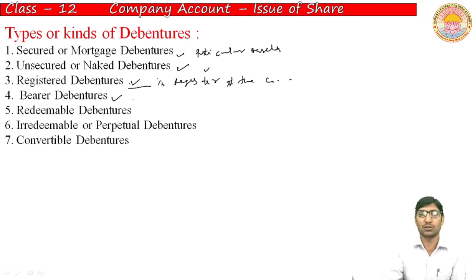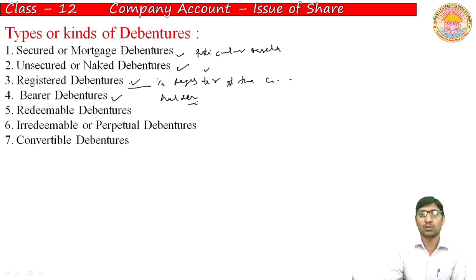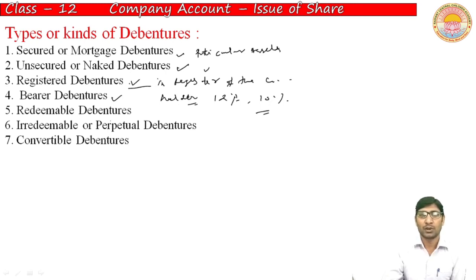The next type is bearer debenture. Bearer debentures are those which can be freely transferred by mere delivery — they can be negotiated from one person to another. These are freely negotiable. In such a case, interest payment is made to whoever is the current bearer, at the specified rate mentioned in the terms, whether 12% or 10%.